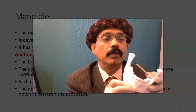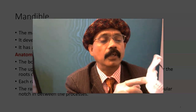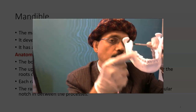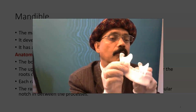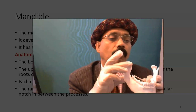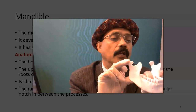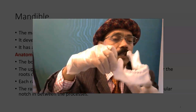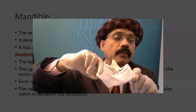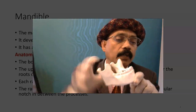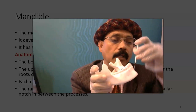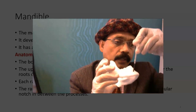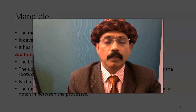Here we have the mental tubercle and incisive fossa. On this side we have the oblique line. This is the ramus of the mandible. This is the coronoid process and this is the condylar process. The fovea of the condyle is here — the depressed area is the fovea. And this is the mental foramen.